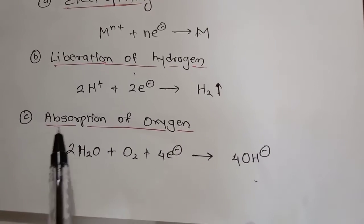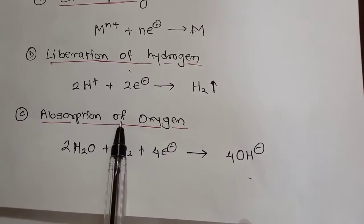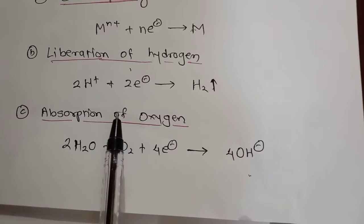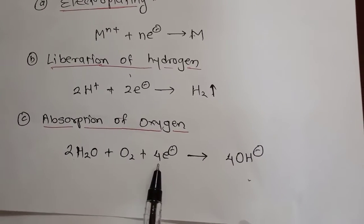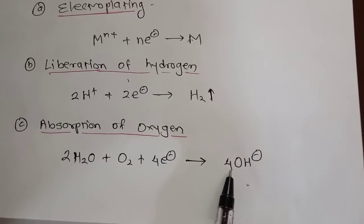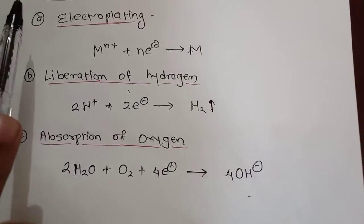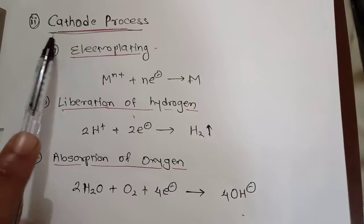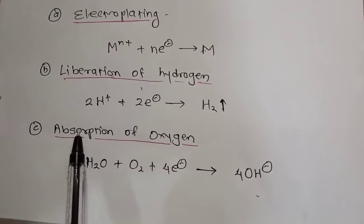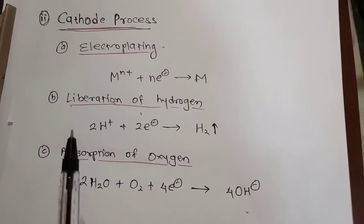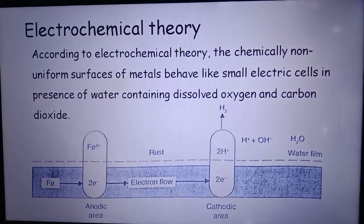The third reaction is absorption of oxygen. This absorption of oxygen usually takes place in an alkaline or neutral medium, where water, oxygen, and electrons react to form hydroxide molecules. So at the cathode, three reactions take place: electroplating, liberation of hydrogen, and absorption of oxygen.